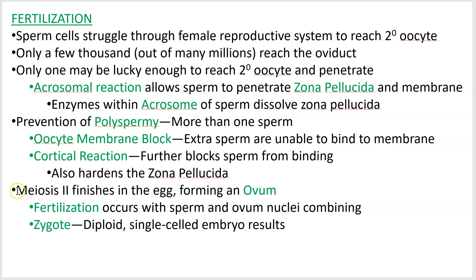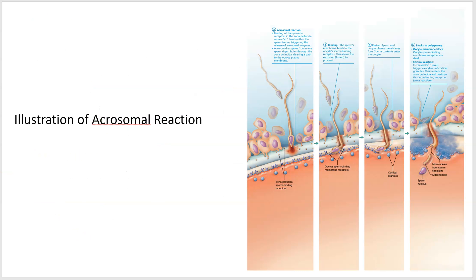So once that sperm nucleus gets in, that's when meiosis two basically finishes. That's when the secondary oocyte becomes an ovum — and ovum is just egg — and that's kind of the finished product. An ovum and a sperm cell are at the same stage of development; they're both the finished product. When those two nuclei get together, you've got fertilization. And the result of that fertilization is a diploid, single-celled embryo called a zygote. Here is an illustration of the acrosomal reaction, just so you can put kind of images to the words. And that's the end of video one.